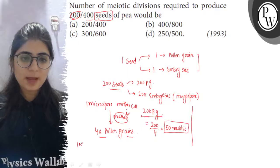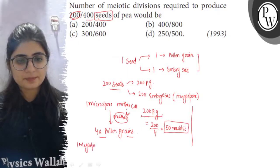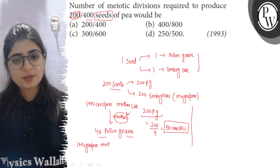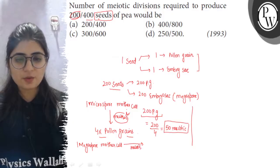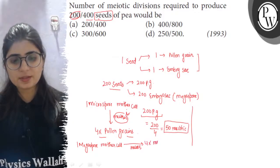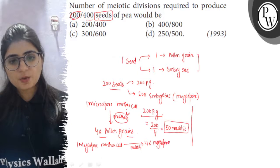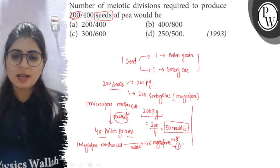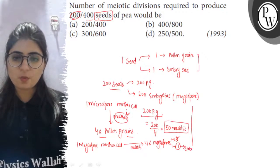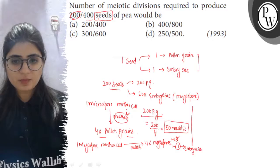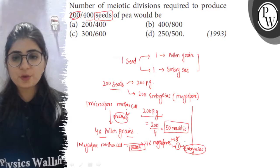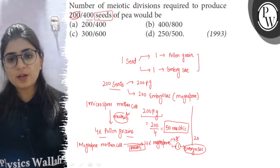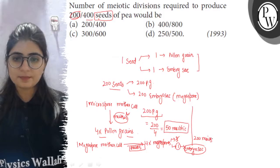Similarly, one megaspore mother cell undergoes meiosis and produces four megaspores. But out of these, three will degenerate, so only one will be functional, and this functional megaspore will produce one embryo sac. So, to produce one embryo sac, one meiosis is required, and to produce 200 embryo sacs, 200 meiotic divisions will be required.